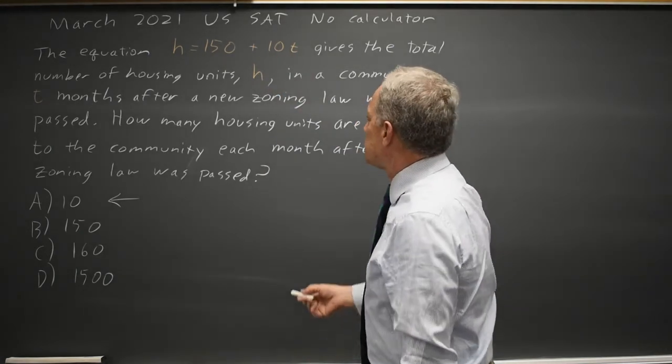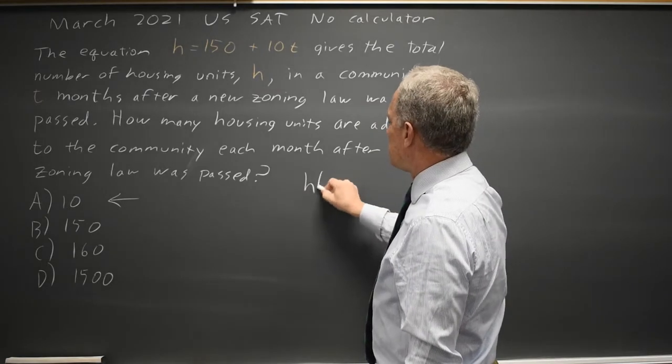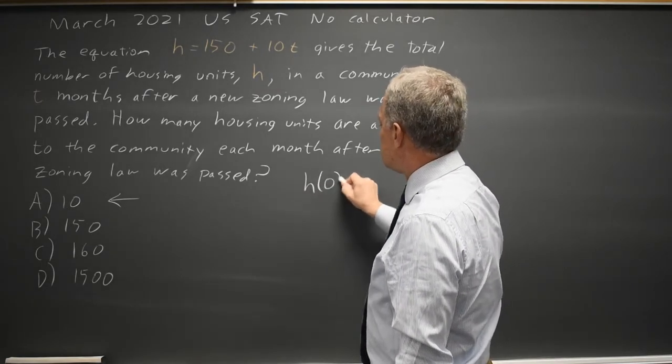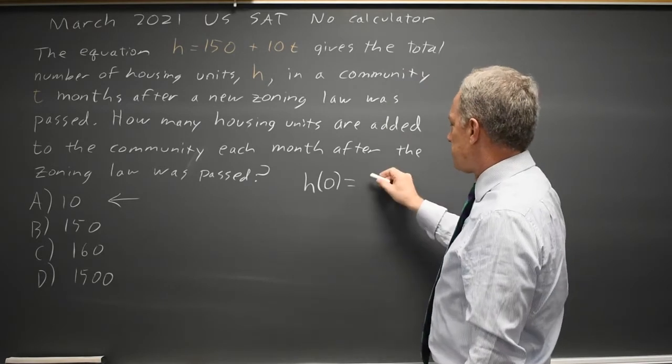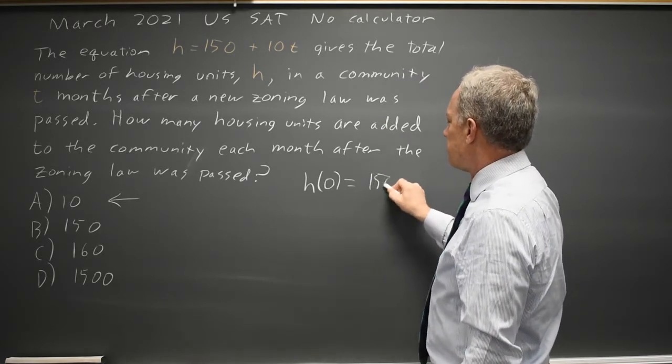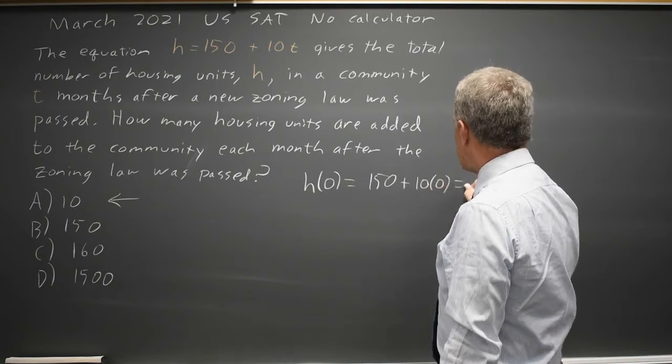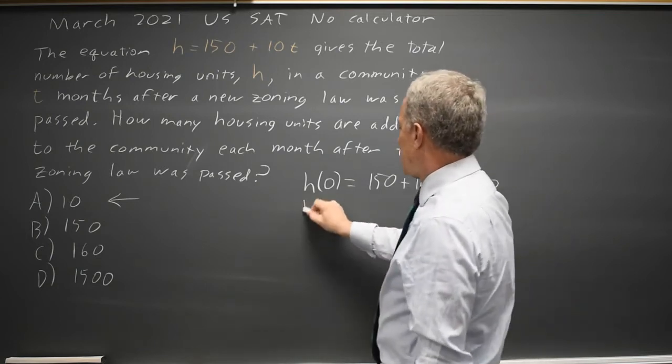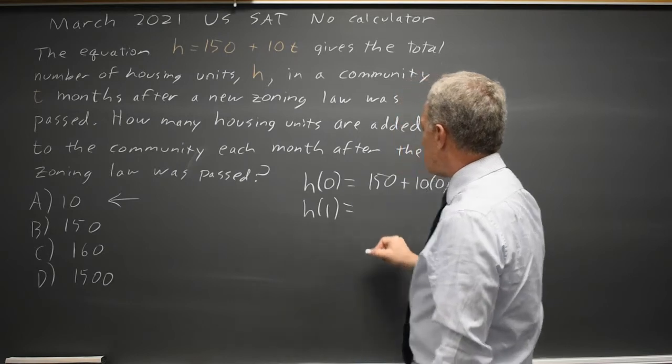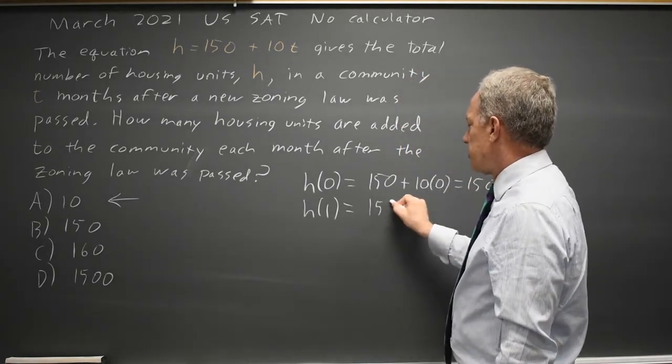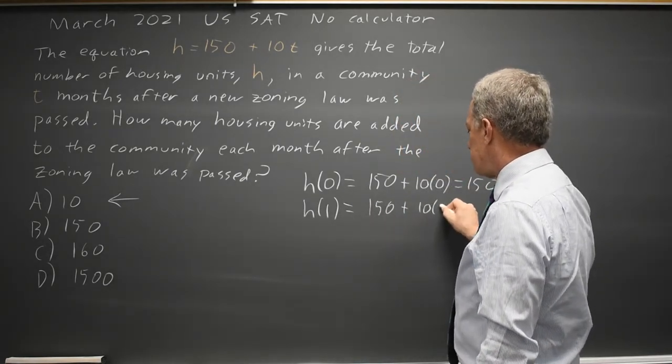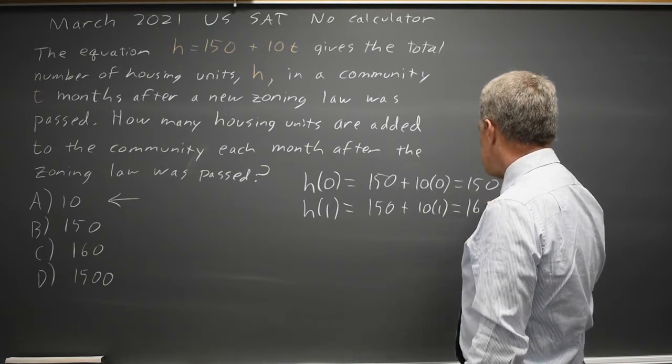If we don't recognize that, we can look at h of 0. The number of housing units 0 months after the law is passed is 150 plus 10 times 0, which is 150. And h of 1, the number one month after it's passed is 150 plus 10 times 1, which is 150 plus 10 is 160.